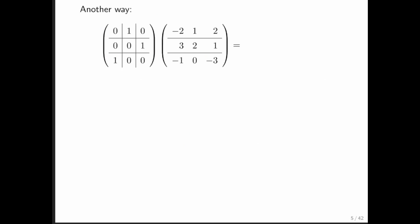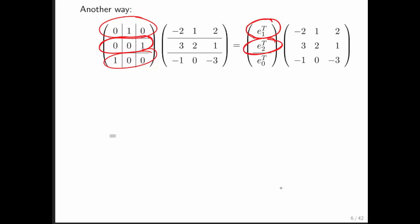In an effort to work towards a more general understanding of this, let's look at it this way. This first row of the permutation matrix can be thought of as unit vector E1 transposed. This is E2 transpose. This is E0 transpose.